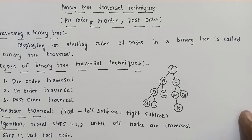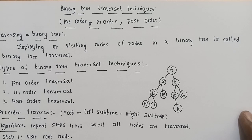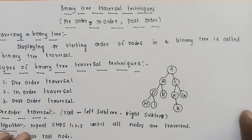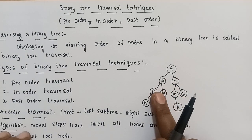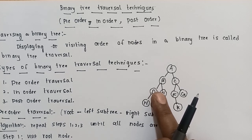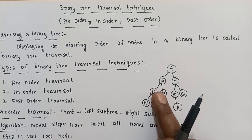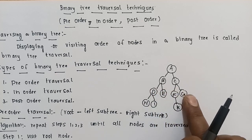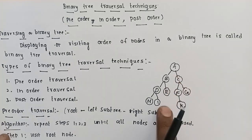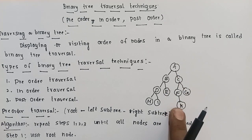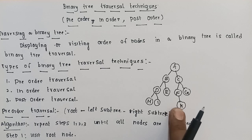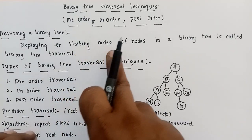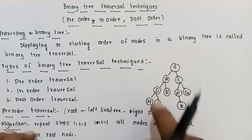In my previous video, we discussed what a binary tree is and the different types of binary trees. In a binary tree, each node should have a maximum of two children only — either no children, one child, or two children. Traversing means visiting each node of the tree. The definition of traversing is displaying or visiting nodes in a binary tree in a certain order. This is called binary tree traversal.